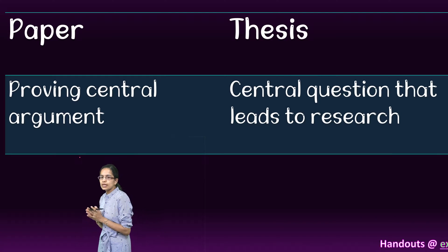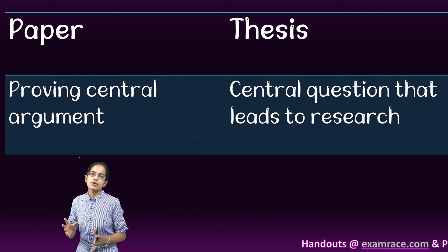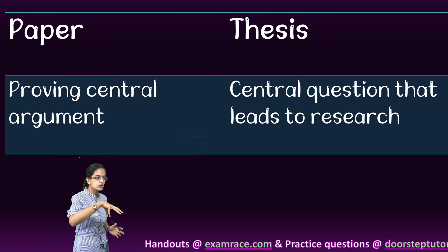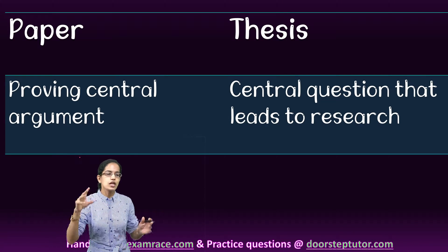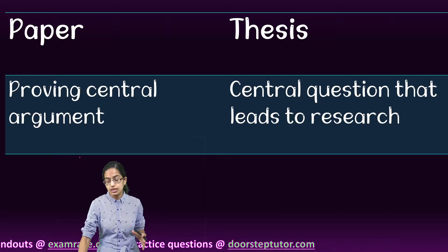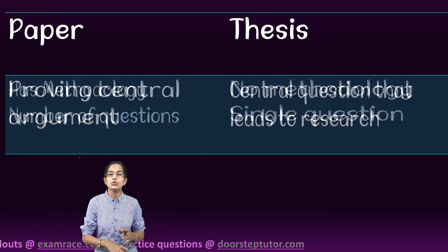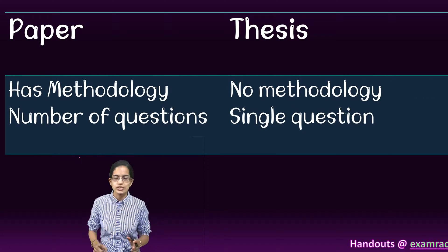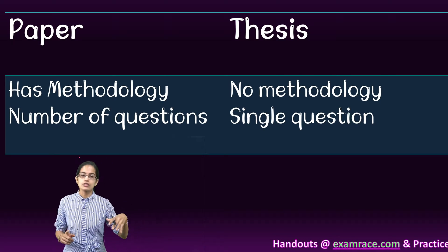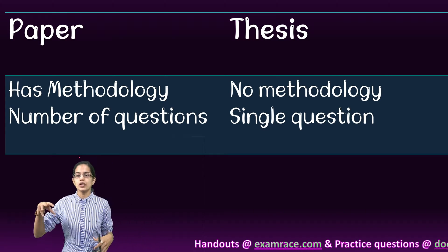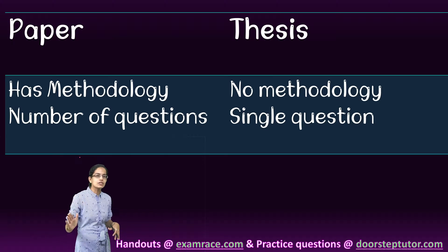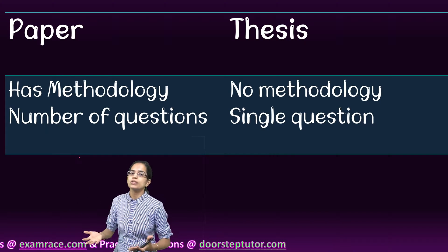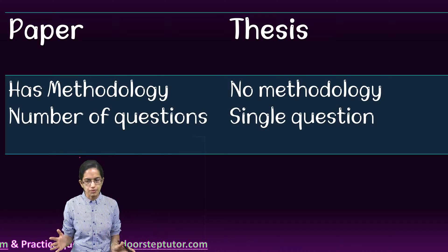If we focus on paper versus thesis: under a paper we have a central argument, but under a thesis we have a central question that leads to a research — so that's one of the major differences. In a thesis there is no one single methodology, but there is one single central question. However, in a paper we have a set methodology to be followed, with not just one question but numerous questions that could be part of the paper.